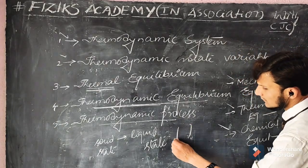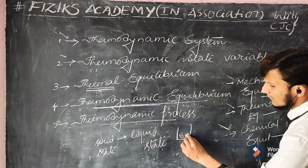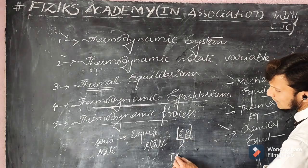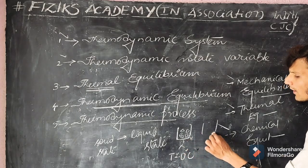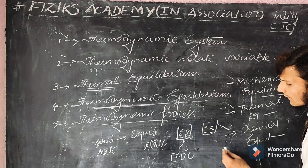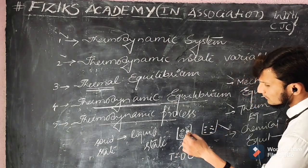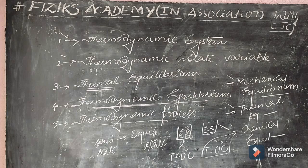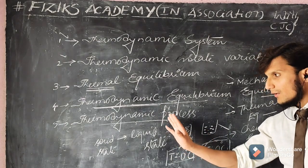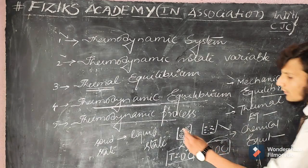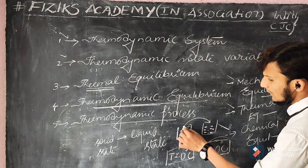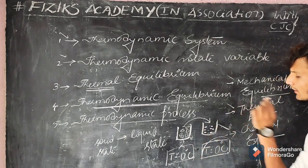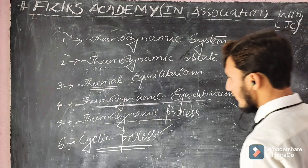Consider a glass with ice cubes. When heated, all the ice melts and becomes water. After the last piece of ice melts, the temperature is still zero degrees Celsius. So melting of ice is an example of a thermodynamic process — the system transforms from an initial thermodynamic state (solid) to a final thermodynamic state (liquid).